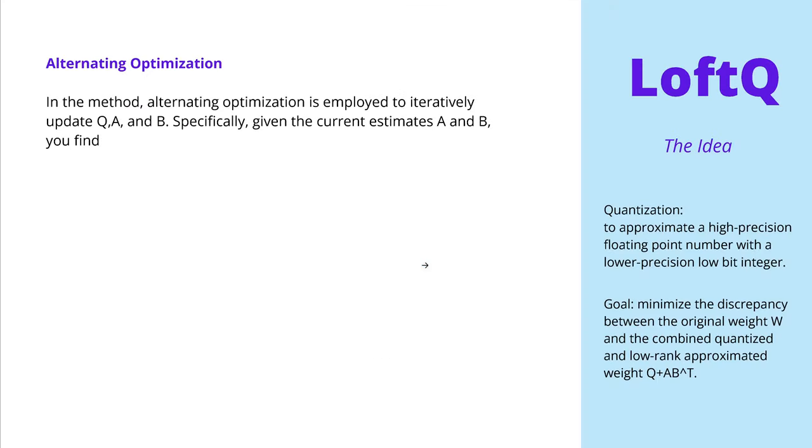So now to this beautiful idea of the authors, and they say, we thought about alternating optimization. And this alternating is the key. So in this methodology of LoftQ, the quantization here, alternating optimization is employed to iteratively update here our Q, our quantization weight tensor, our A and our B matrix. Specifically, given the current estimates of A and B, you find a quantized Q that minimizes the norm I just showed you one second ago.